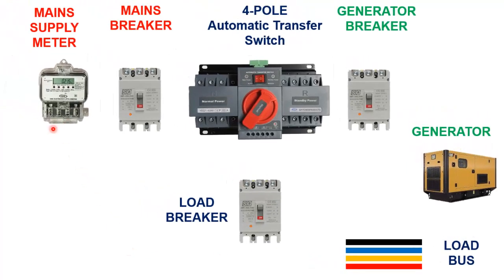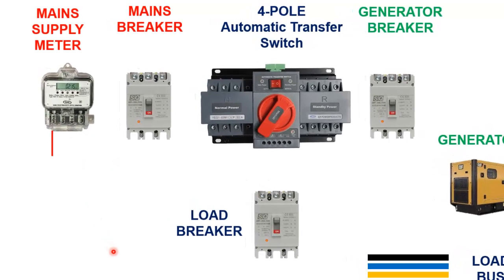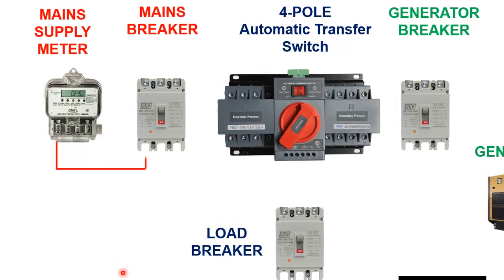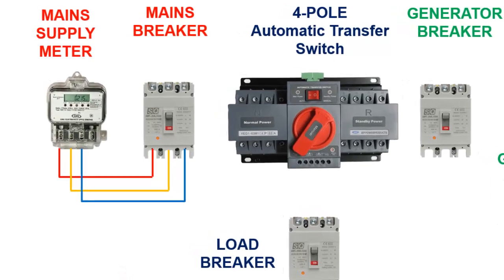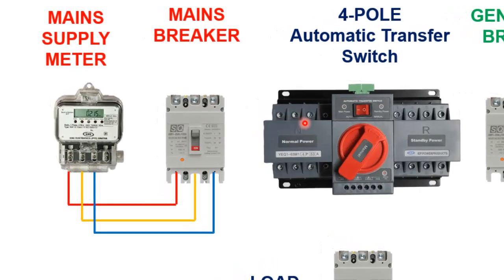Let's start the connections one by one. Please watch the video till the end. First, connect all three phases from the output of the energy meter with the input of the mains breaker. Now connect the output of the circuit breaker with input terminal number one of ATS, along with the neutral wire.